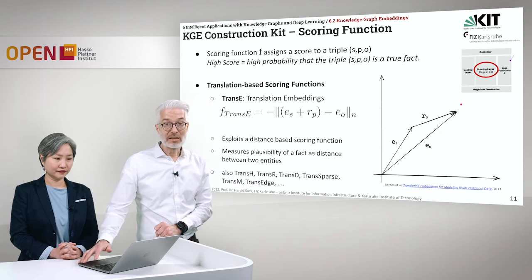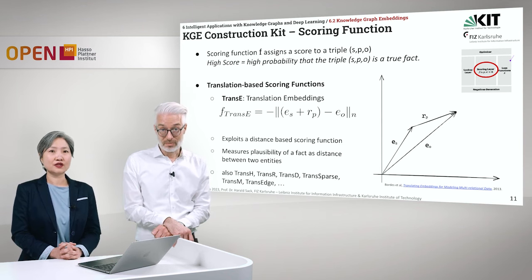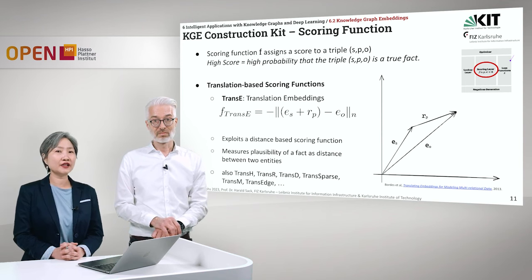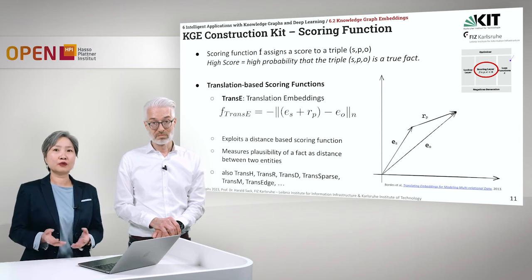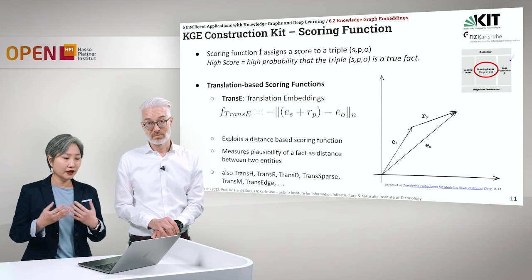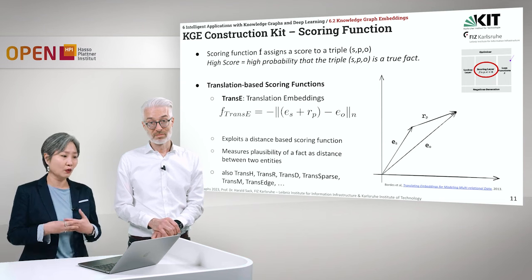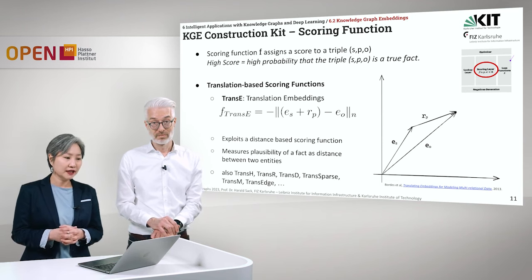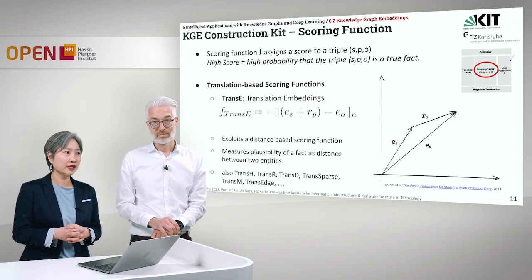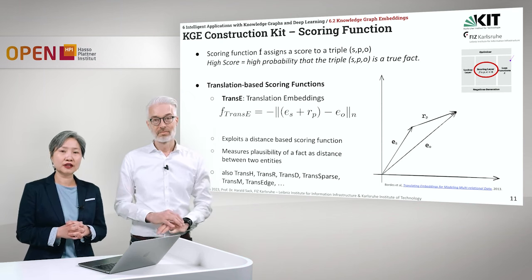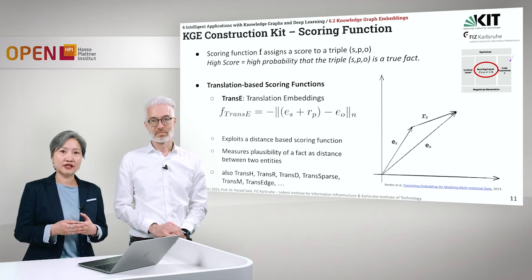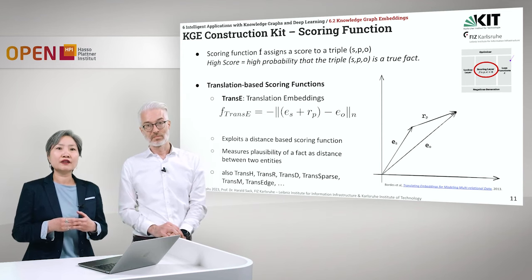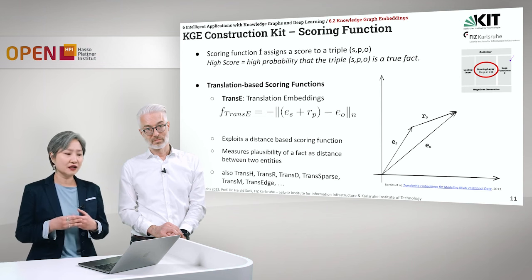Let's start with a scoring function. The scoring function assigns a score to a true triple SPO; a high score means the triple most probably refers to a true fact. The first scoring function we present is a widely used one called Trans-E or Translation Embeddings. Trans-E presupposes that when you have an embedding for the subject, it should be closer to the embedding of the object plus a translational vector, which is the embedding of the relation. It exploits a distance-based scoring function, and there are several variants such as Trans-H, Trans-R, Trans-D, and so on.